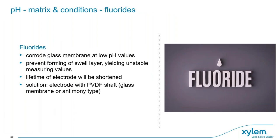Fluorides in the sample can corrode the glass membrane, but only if the pH value is low enough that they exist as hydrofluoric acid. This prevents forming of the swell layer and yields unstable measurements, and also shortens electrode lifetime. A solution is to use electrodes with a PVDF shaft — normally the glass membrane is still present but the shaft is protected. Another option is an antimony-type electrode, which is also pH sensitive, but has several disadvantages: it has a different zero point and it is a heavy metal, which is generally undesirable.